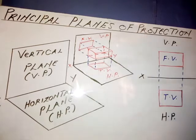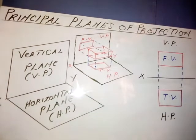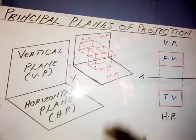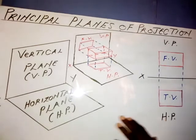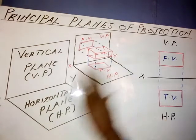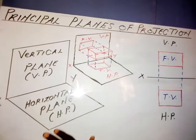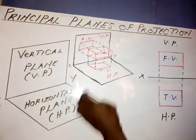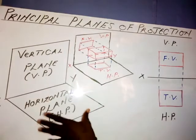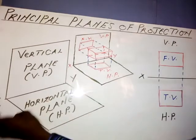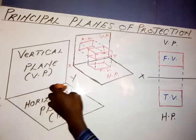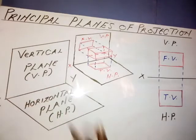But these two — the vertical plane and horizontal plane — are always used whenever we want to produce the orthographic views of an object. And the line that separates these two planes is known as the x-y line.